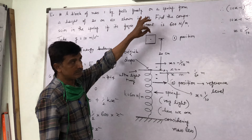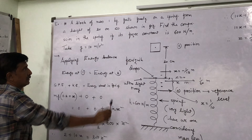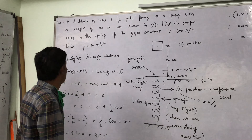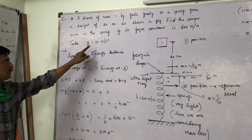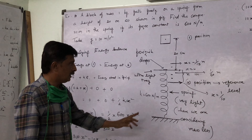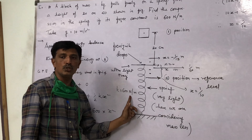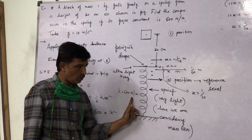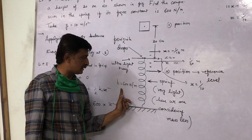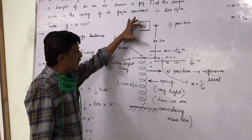As shown in the figure, this is the spring and this is the ground level. The block of mass 1 kg is at a height of 20 cm and we are giving it free fall. Find the compression in the spring if its force constant is 600 N per meter. Take g as 10 m/s².